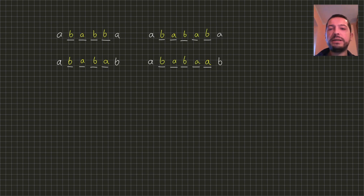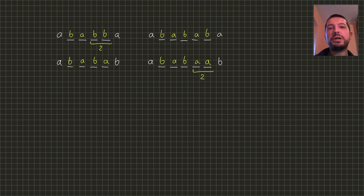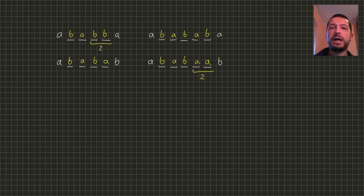We can see that in two cases this pattern nicely fits inside the gap, but in the remaining two cases we were forced to construct an additional fragment of size 2. But since we already assumed that the answer is at least 2, these additional fragments won't hurt us. Therefore, we have a procedure to fill any gap of size at least 2 without increasing the answer.